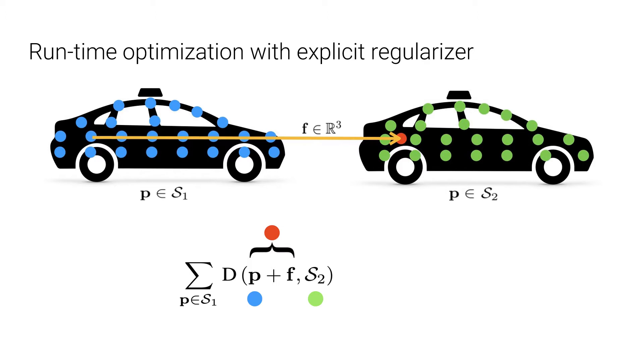We revisit the non-learning scene flow methods in real-world autonomous driving settings without labeled training data. For the traditional optimization-based approach, it minimizes the point distance D between the two point clouds S1 and S2 to get the explicit scene flow F. However,